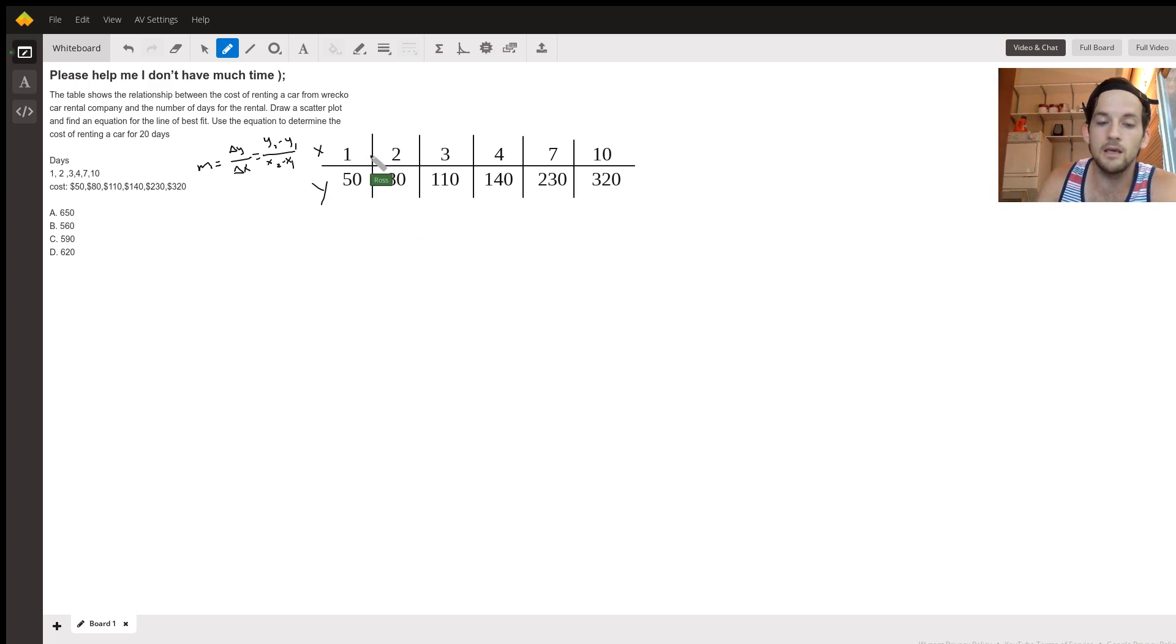So we can check the slope, for example, over the first couple days. The way you do that is you take the second y, 80, minus the first y, which is 50, just following that formula, over 2 minus 1. On top that's going to be 30 over 1 on bottom. So that's just going to be 30.